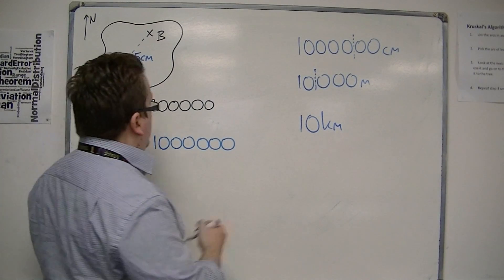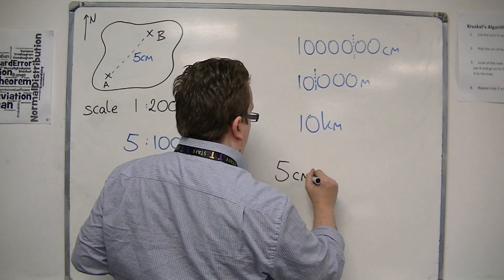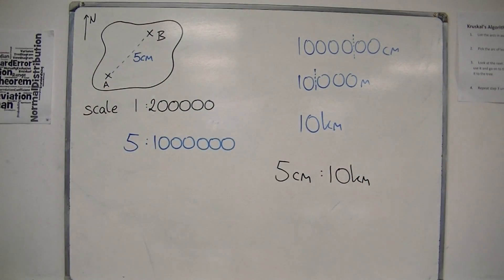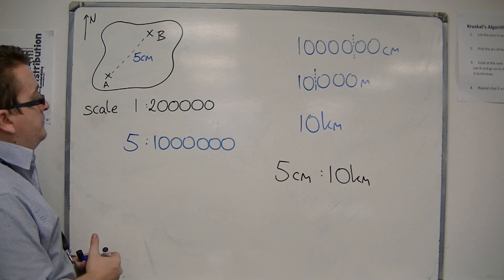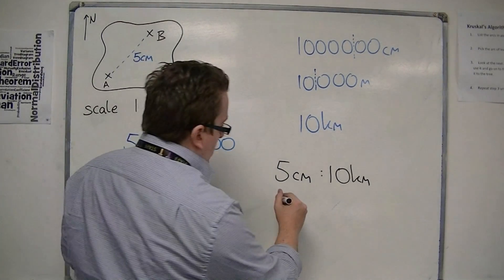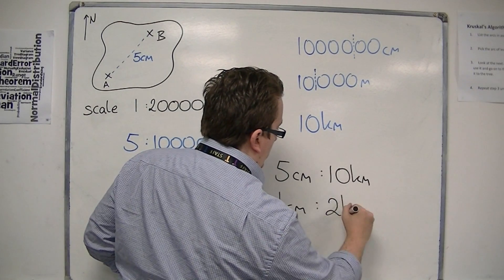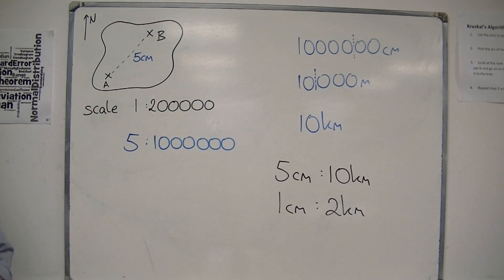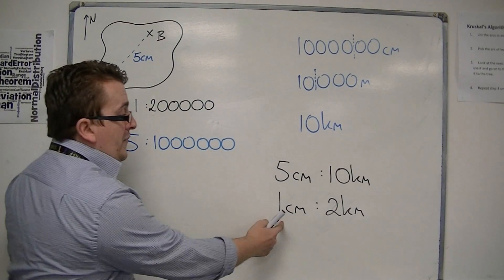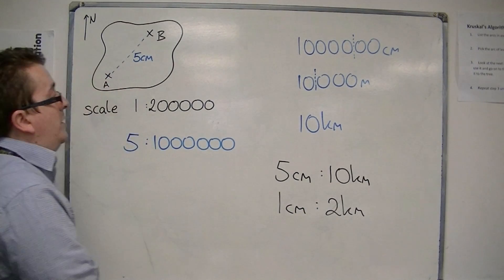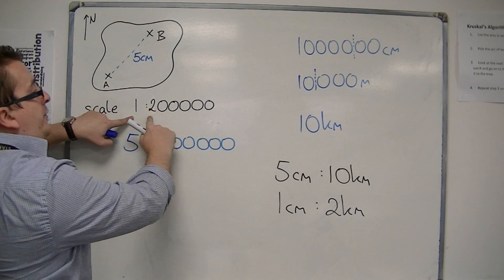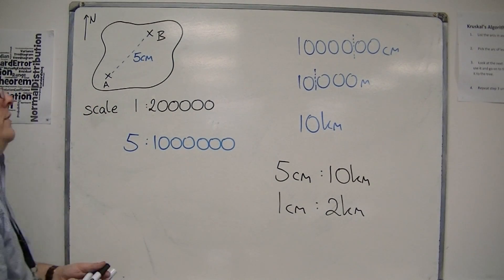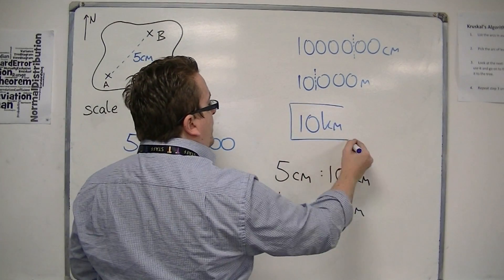So that would mean that five centimetres represents ten kilometres. And you could write that as the ratio like this: five centimetres to ten kilometres. Or, you could write that as one centimetre to two kilometres if you divide both by five. So this is simplifying the ratio. One centimetre on the map represents two kilometres, or one centimetre represents two hundred thousand centimetres. So what we found is that the two towns are ten kilometres apart.